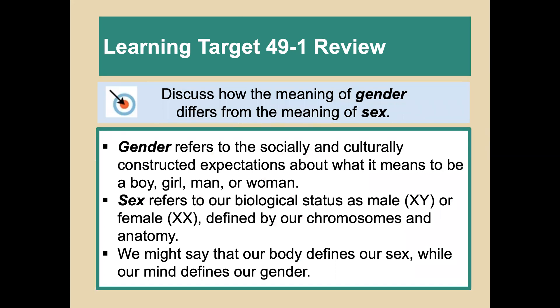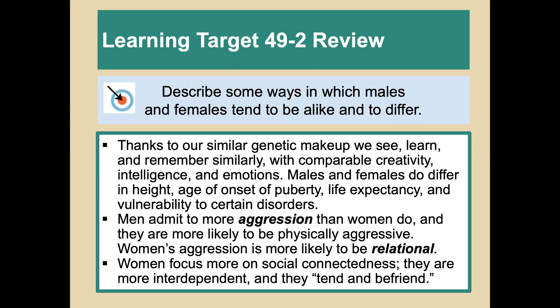For the learning target review: understanding the differences between gender and sex is important for this module. Gender refers to the socially and culturally constructed expectations about what it means to be a boy, girl, man, or woman, whereas sex refers to our biological status as male or female, defined by our chromosomes and anatomy. We might say that our body defines our sex while our mind defines our gender. Men and women have lots of similarities — thanks to our similar genetic makeup we see, learn, and remember similarly with comparable creativity, intelligence, and emotions. Males and females do differ in height, age of onset of puberty, life expectancy, and vulnerability to certain disorders. Men admit to more aggression than women and are more likely to be physically aggressive, while women's aggression is more likely to be relational.